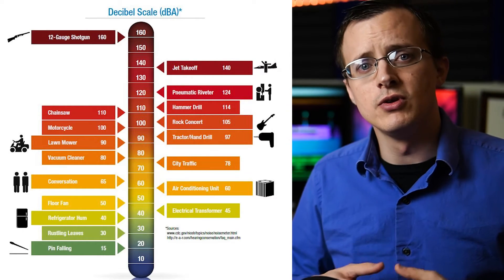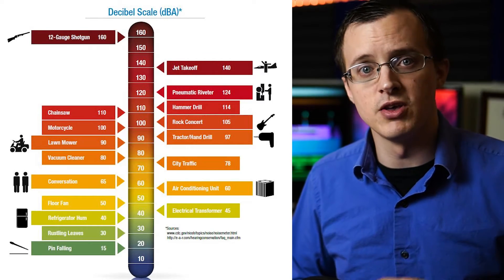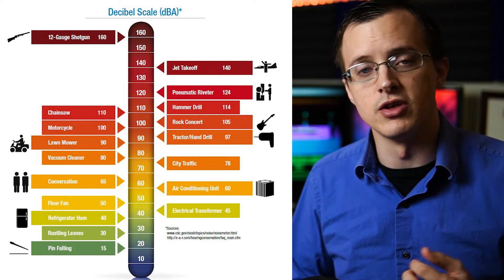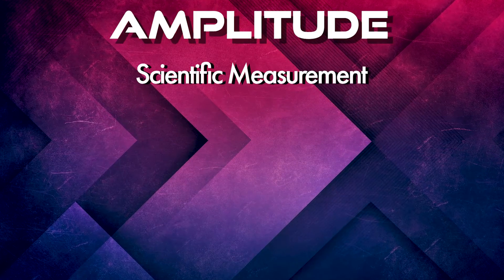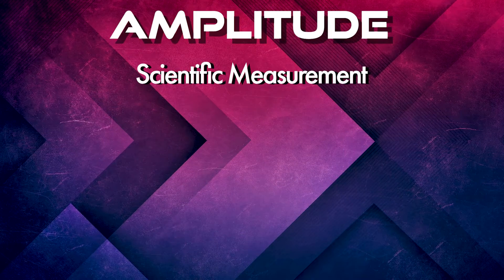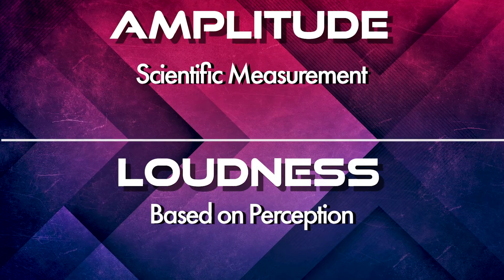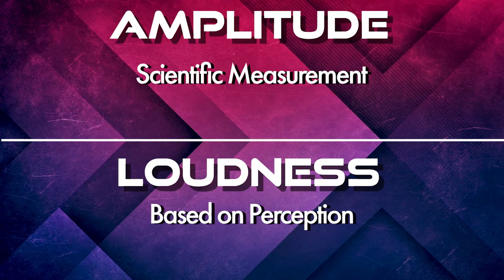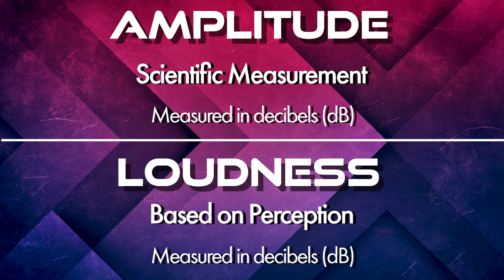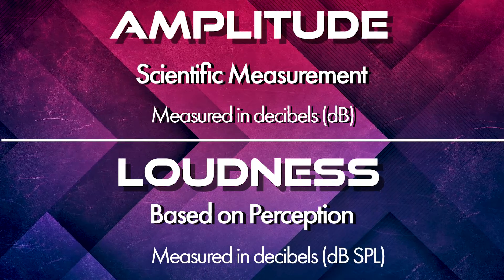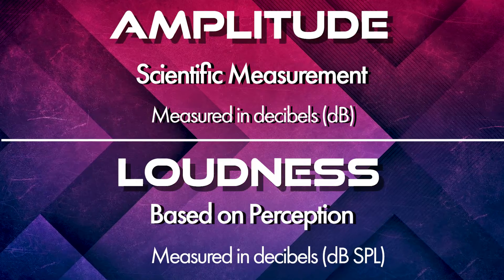As a result, regulations have been put in place which limit exposure to high sound pressure levels in the workplace. To review: amplitude is a scientific measurement of how loud a sound is. Loudness is how loud or soft a sound is perceived to be by human beings. Both are measured in decibels, which are measured differently depending on the application, but we'll be demystifying the decibel throughout the series.